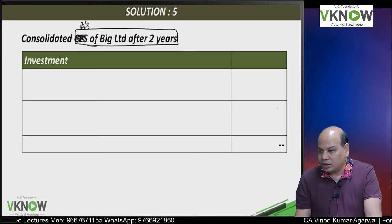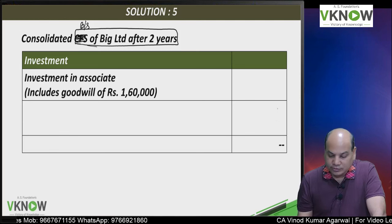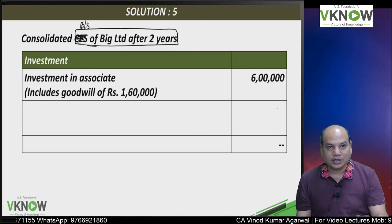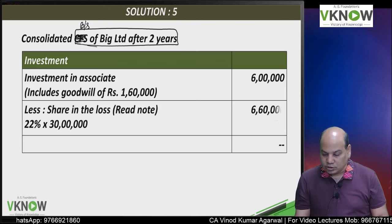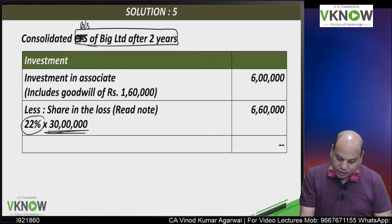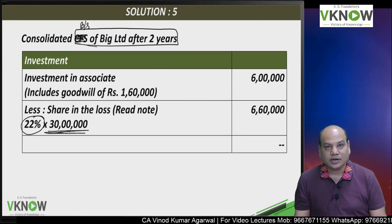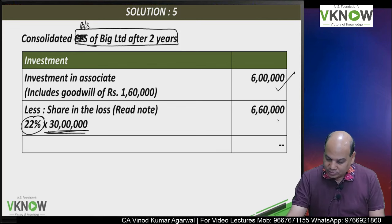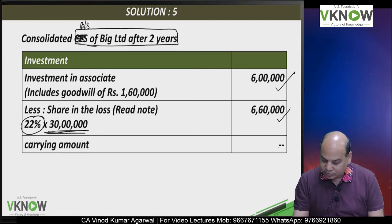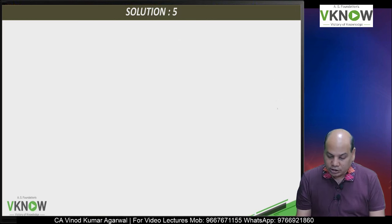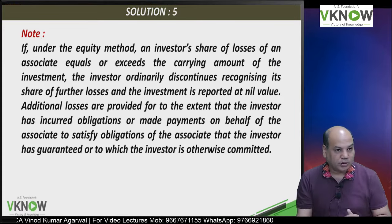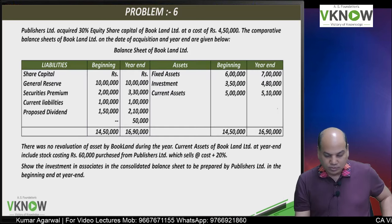The consolidated balance sheet after 2 years: the investment was made at a cost of 6 lakh which includes goodwill of 1 lakh 60,000. During next 2 years, the associate incurred a loss of 30 lakh and we have 22 percent stake, so 6 lakh 60,000 share of loss. 6 lakh minus 6 lakh 60,000 is negative, but I will not take the negative number — I will write nil here — and write the same note as in question number 4.